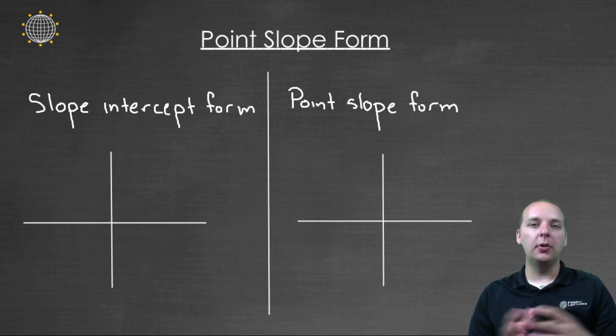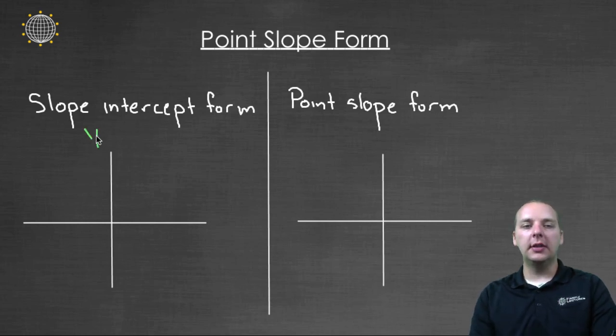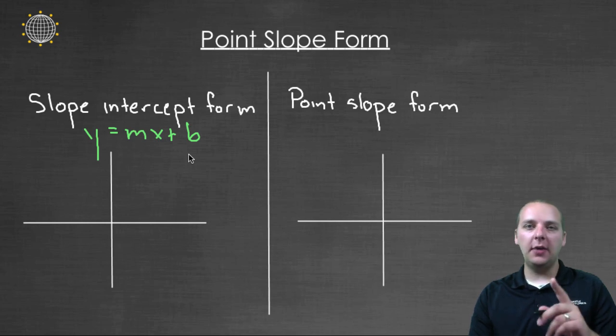Probably the most popular form is something called slope-intercept form, that we probably know fairly well. It looks like y equals mx plus b, and it's a great form of a line. You can graph lines quickly and easily in this form, and it has a lot of benefits and advantages. But it does have one disadvantage I want to talk about.